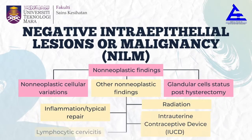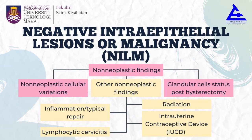For non-neoplastic findings, it can be separated into three different categories: non-neoplastic cellular variations, other non-neoplastic findings, and granular cell status post-hysterectomy. Other non-neoplastic findings include reactive cellular changes in inflammation or atypical repair.